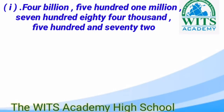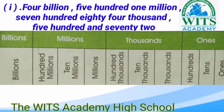I will now solve point number 1: 4 billion 500 1 million 784 572. यह हमारे पास words में number हैं, इन्हें figures में write करना है। Figure में write करने के लिए, left side से start होता है। पहले हम places write करते हैं। Chart में places right side से read करते हैं और left side से write करते हैं: ones, tens, hundreds, thousands, ten thousands, hundred thousands, millions, ten millions, hundred millions, billions। International way में हर portion three digits का होता है — पहला ones का, फिर thousands का, फिर millions का, फिर billions का।